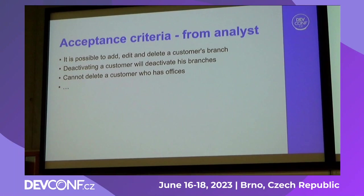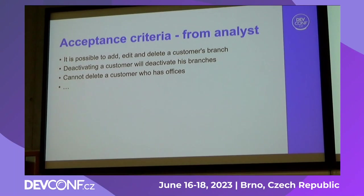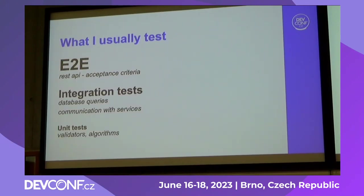But the main part of my application is to provide a REST API to the frontend, and it can be covered with acceptance criteria from analysts. For example, it is possible to add, edit, and delete customers' branches, and so on. So I write a lot of end-to-end tests for the REST API, because I have acceptance criteria which the REST API should match.